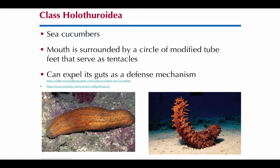Our last class is Holothuroidea — I just think of the word 'whole,' and that helps me remember these have a circular mouth surrounded by tube feet that help stuff food into their mouth. They are the sea cucumbers — it might look like a slug to you, but it has tube feet on the bottom that's how it moves along. They also have a rather unique characteristic that they can expel their guts through their anus if they are attacked.